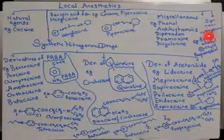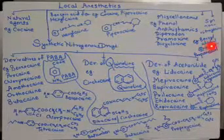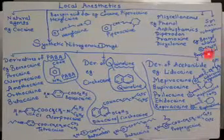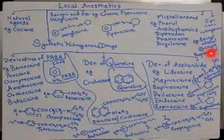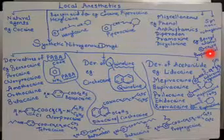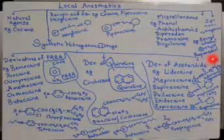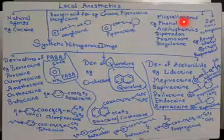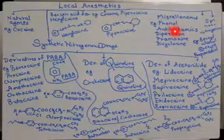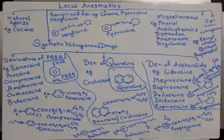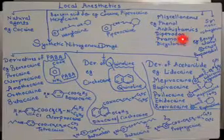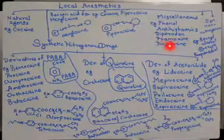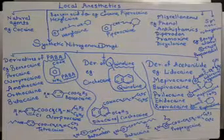The next class is synthetic non-nitrogenous drugs — meaning nitrogen is not present in their structure. For example, benzyl alcohol: draw the aromatic ring, CH2 (the benzyl group), with an OH group, and propanediol. Miscellaneous agents include phenol (aromatic ring with OH), antihistaminics, diperodon, primoxin, and dyclonine.